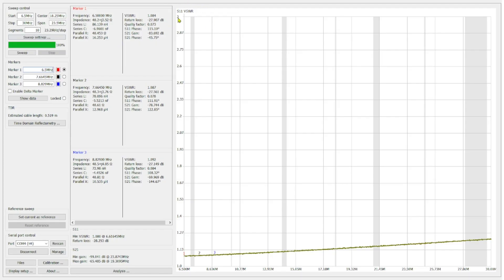We went ahead and we ran the sweep. The chart we're using here is an S11 VSWR SWR measurement. You can see down here at 6.5 megahertz, at marker number one, we are at 1.084, which is pretty good SWR.